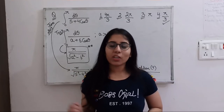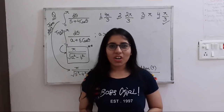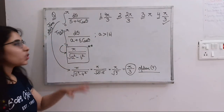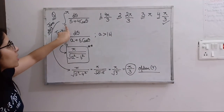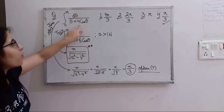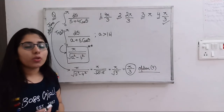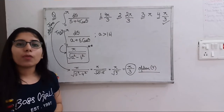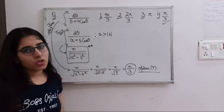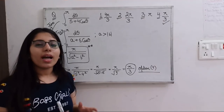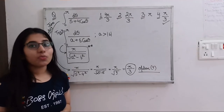Now let's start the video and talk about how we can solve such kind of question. This is a very easy method. The question which has been asked in the NET June 2019 exam is: integration from 0 to π of dθ upon (5 + 4·cosθ). We need to find the value of this integration. The four options are mentioned on screen.